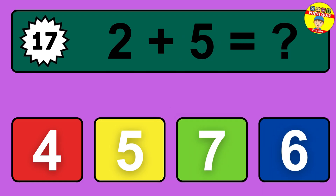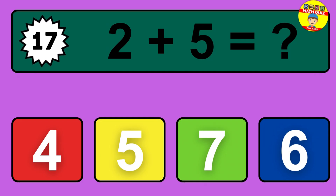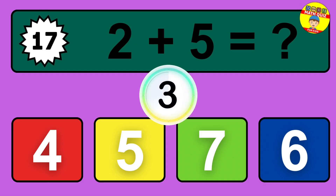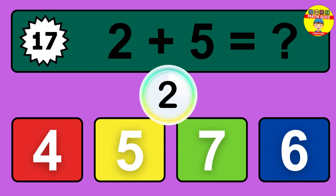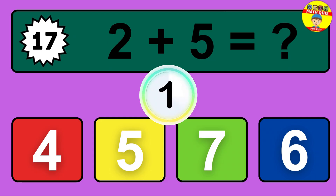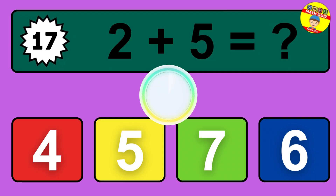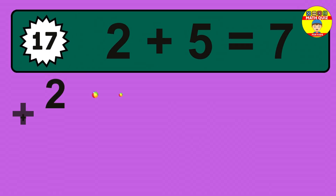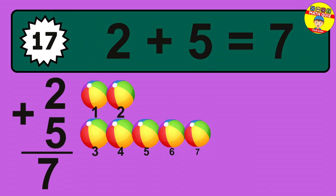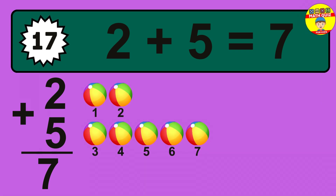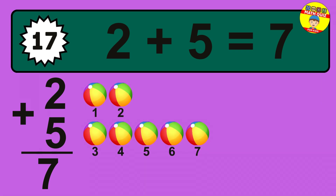Question 17. 2 plus 5 equals what? So the answer is 2 plus 5 is 7.